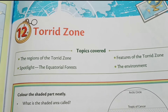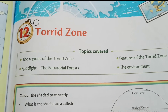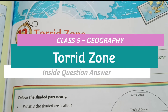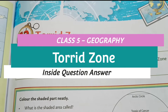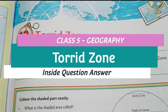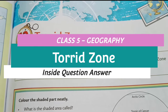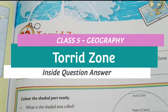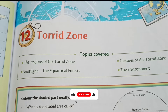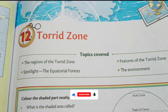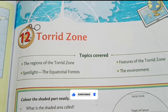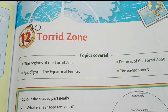Hello students, welcome to West Bengal English Video Guide. Today we are going to solve Chapter 12, Torrid Zone, from Class 5 Geography book — inside and exercise question answers. Before we start, requesting you to like the video, subscribe the channel, and press the bell icon so that you can get all the notifications from the channel on time.